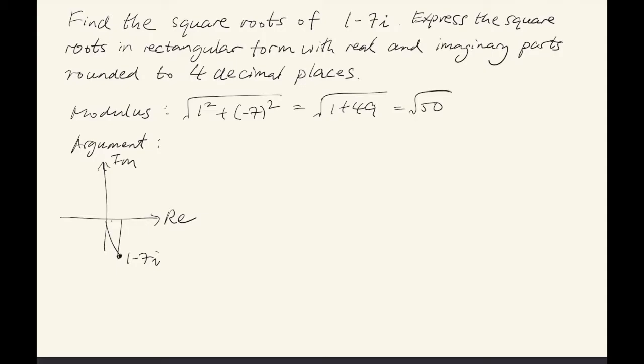If we let this angle be alpha, then this is 7 and this is 1. So the tangent of alpha will be 7 over 1, which is 7. So alpha is going to be the arctangent or inverse tangent of 7. But that's not the argument. The argument is actually this, theta.